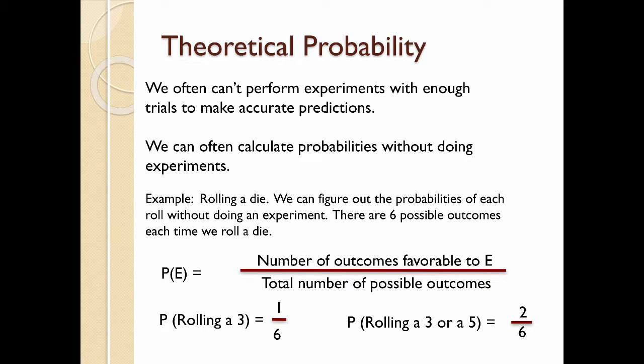Now we also talk about theoretical probabilities. Sometimes it's really just impossible to perform enough experiments to make accurate predictions. We can often calculate probabilities without doing experiments. Not always, but there are times when we can. And when we can, this is called theoretical probability.